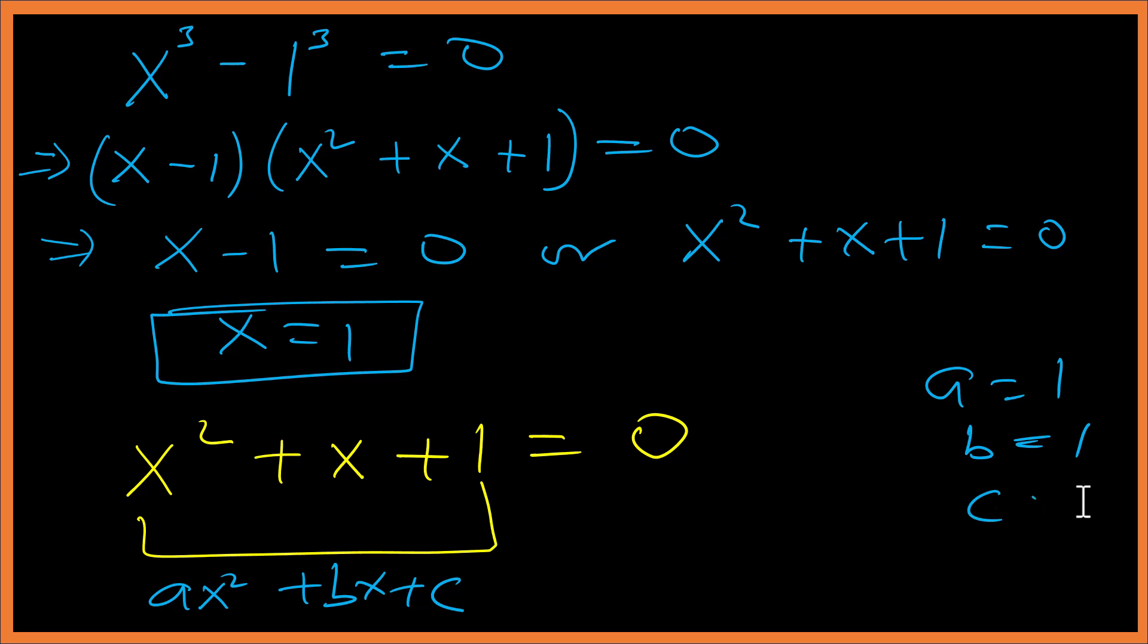c is 1, b is 1. Using the quadratic formula x equals minus b plus or minus √(b² minus 4ac) over 2a. Don't forget a is 1, b is 1, c is also 1.